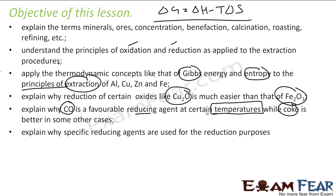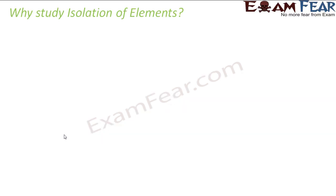We will also explain why specific reducing agents are used for a given reduction process — there are many possible reducing agents but only specific ones are chosen. This brings us to the first question: why should we study this chapter?